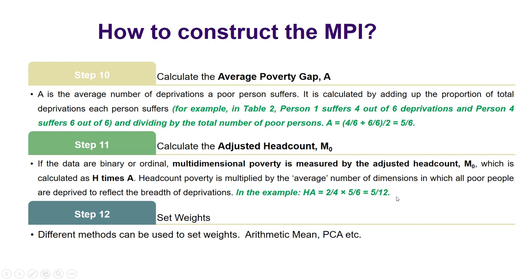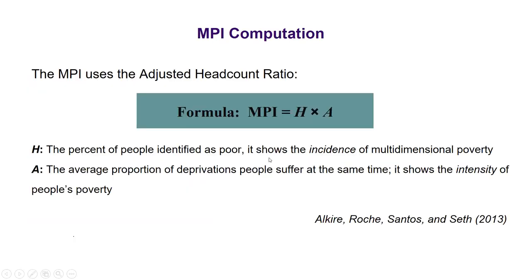The next step is to calculate the adjusted headcount M. Since the data is binary — zero or one — multidimensional poverty is measured by the adjusted headcount M = H × A. We calculated H as two over four, times five over six, giving five divided by 20. You can change the weights, change indicators, or use PCA or arithmetic mean to calculate your indicators and derive the weights — there are different methods, subjective or through equal weightage or principal component analysis.